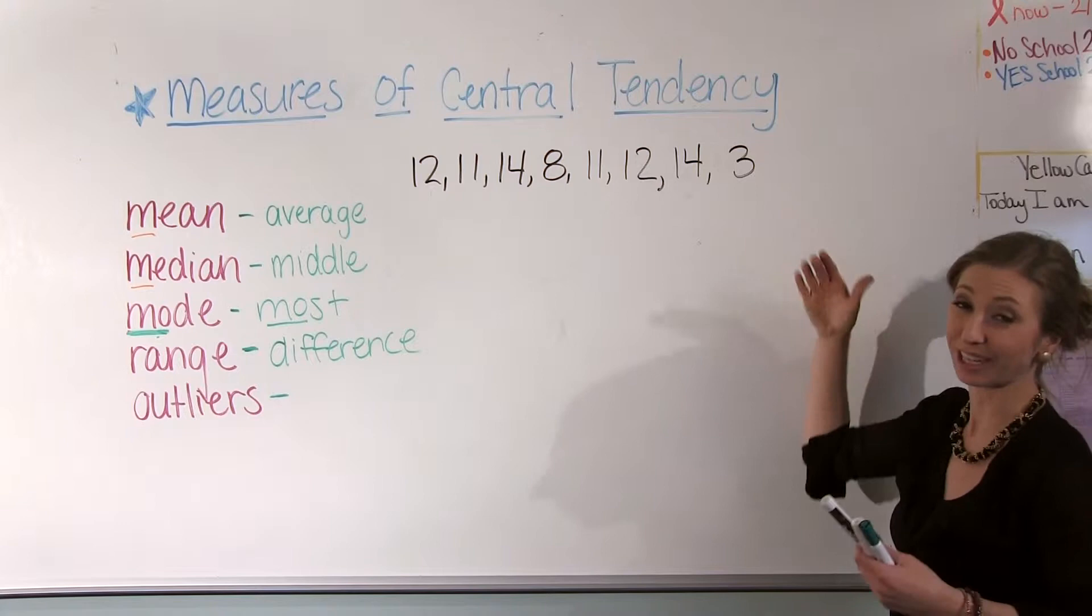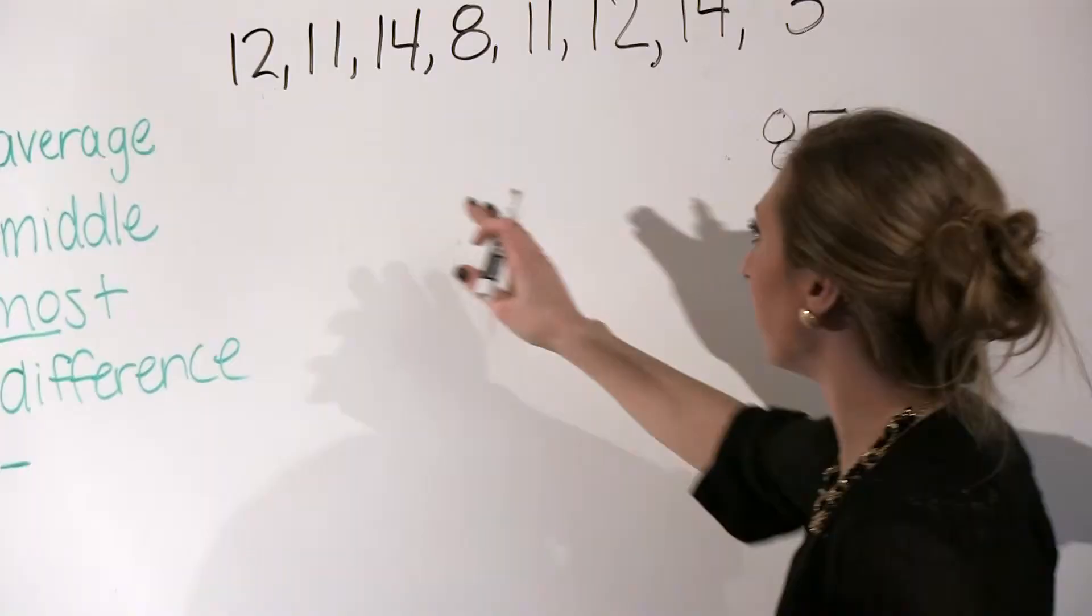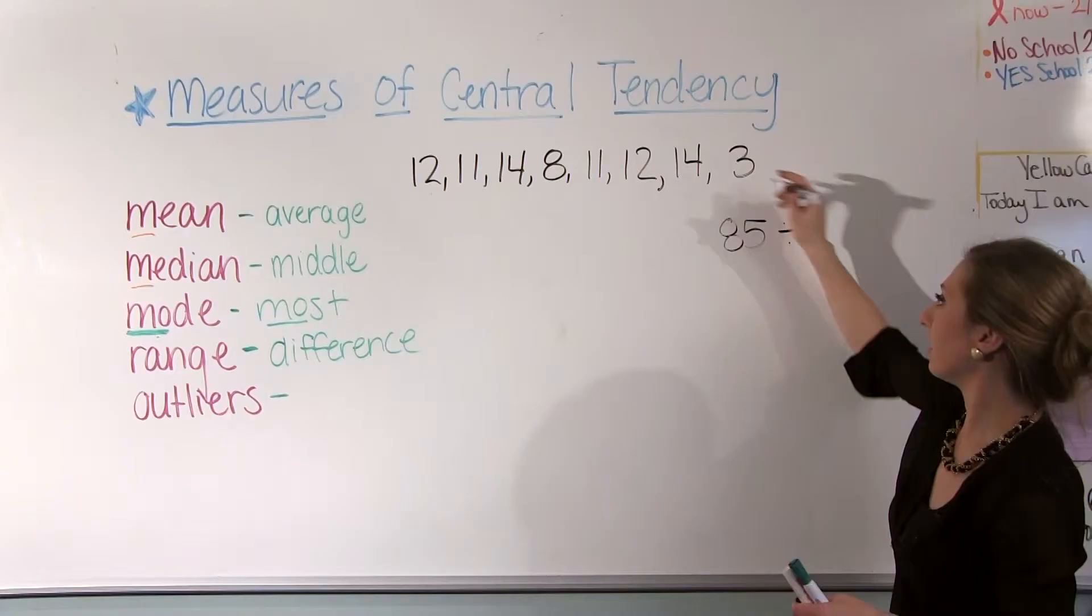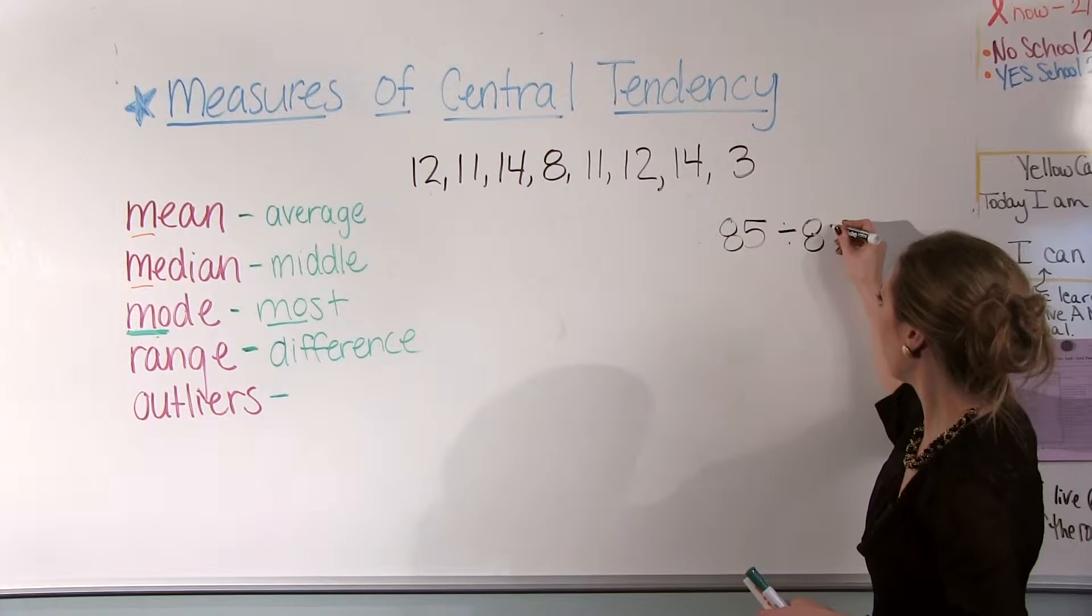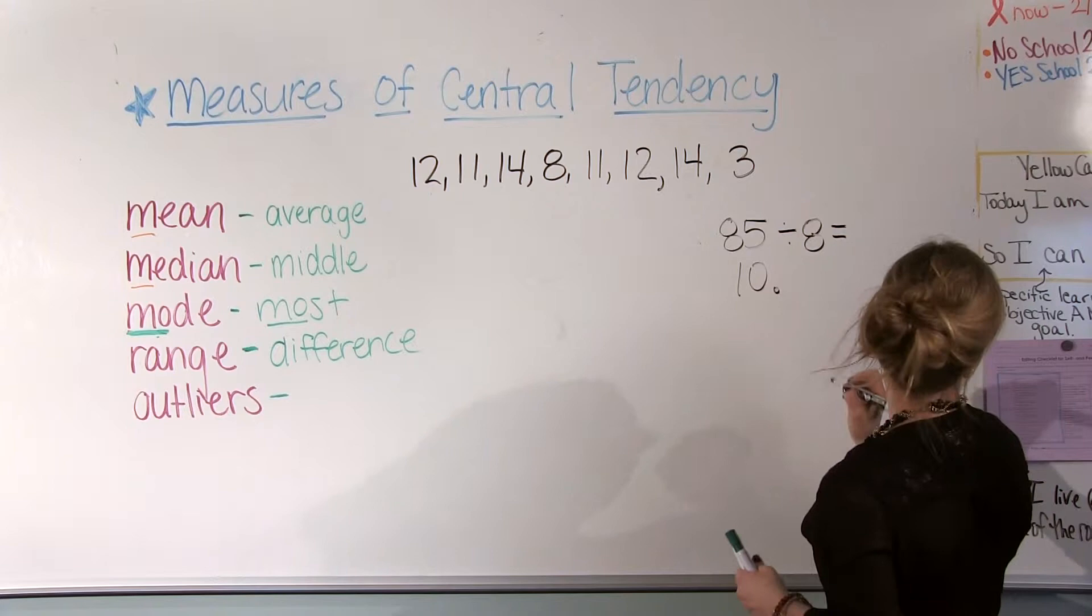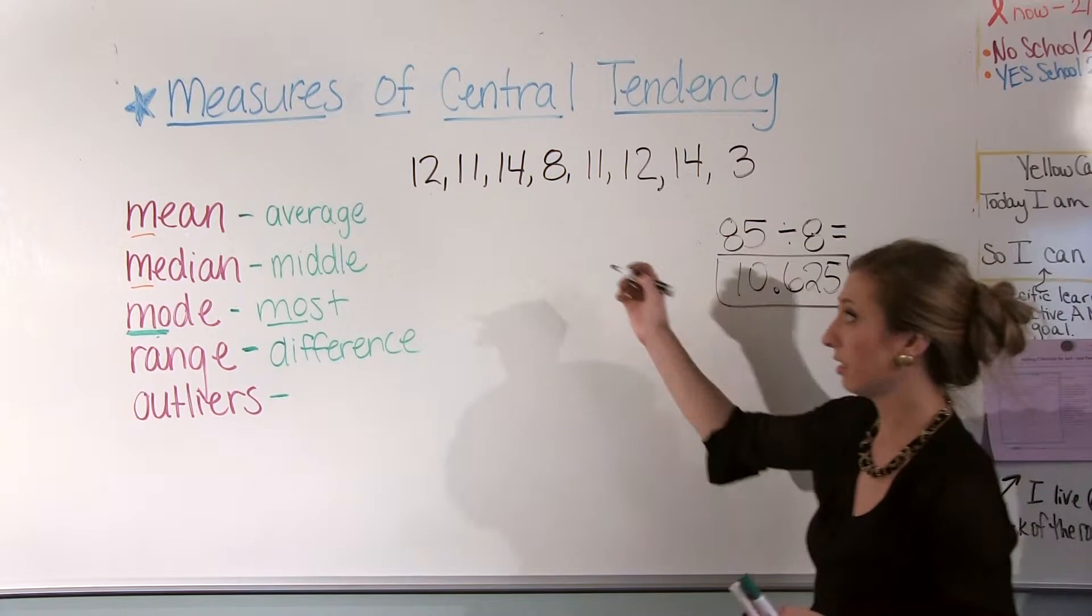And then that 85, we want to divide it by how many numbers there are. So there are eight numbers in this data set, and our average, when you actually end up dividing this, you get this number here, and this is our average or our mean. You'll sometimes hear it being called average or mean, so that's the 10.625.